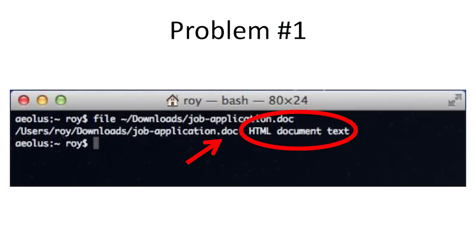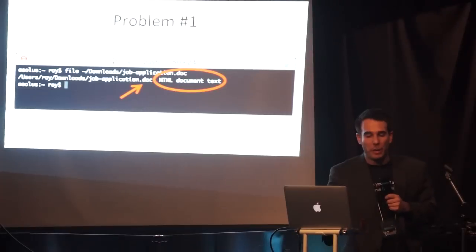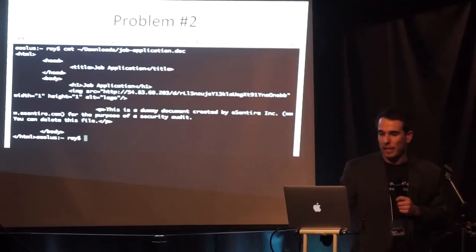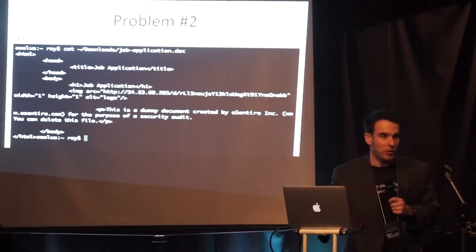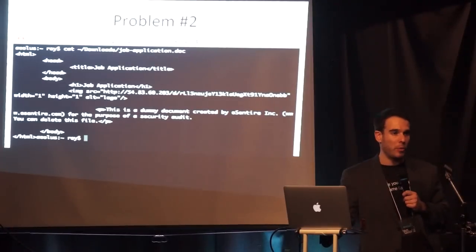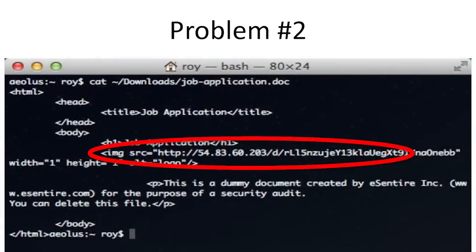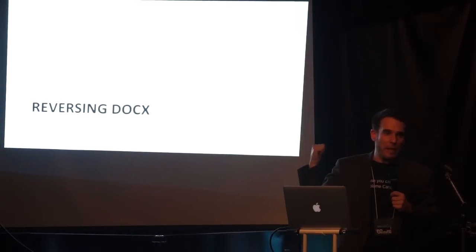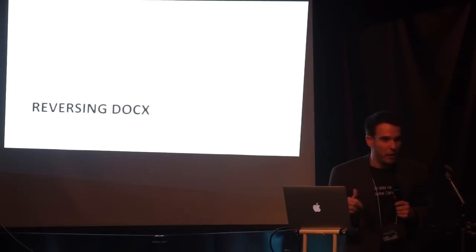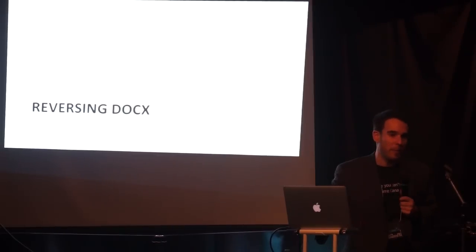There are two problems with this technique. If you're a little suspicious of these documents, the first thing you'd probably do is run the 'file' command to see how the system detects it. In this case, OS X sees the .doc extension but considers it an HTML document because of the content and the magic bytes at the beginning. The next test you'd probably want to run: because it's a text document in HTML, you'd cat the document or open it with a text editor and see there's an image tag with a weird URL inside — that would be your clue. These are problems if you're trying to go after more sophisticated people. If you were going against a sophisticated attacker, you'd probably want to use .docx.